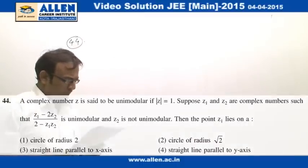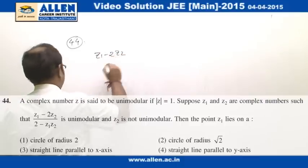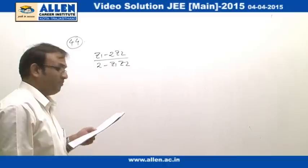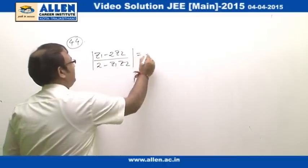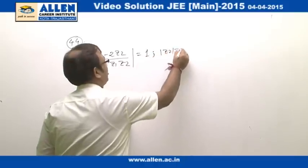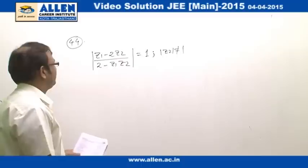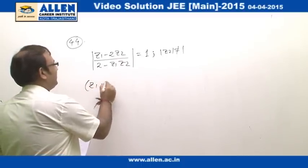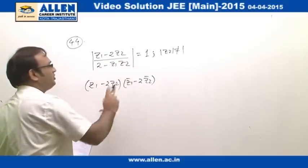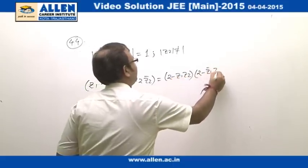In question number 44, we are given a complex number (z₁−2z₂)/(2−z₁z̄₂) and told it is unimodular, meaning its modulus equals 1. Also, z₂ is not unimodular, so |z₂|≠1. Taking the modulus and squaring both sides, we write (z₁−2z₂)(z̄₁−2z̄₂) = (2−z₁z₂)(2−z̄₁z̄₂).